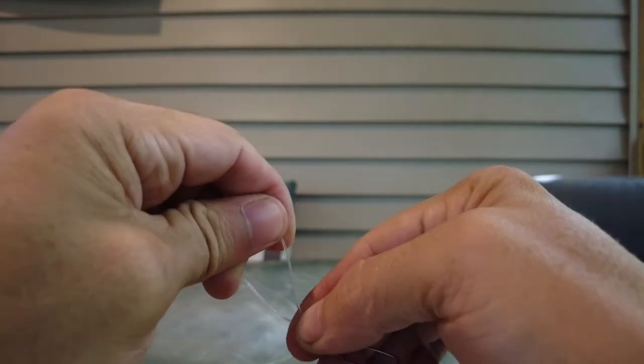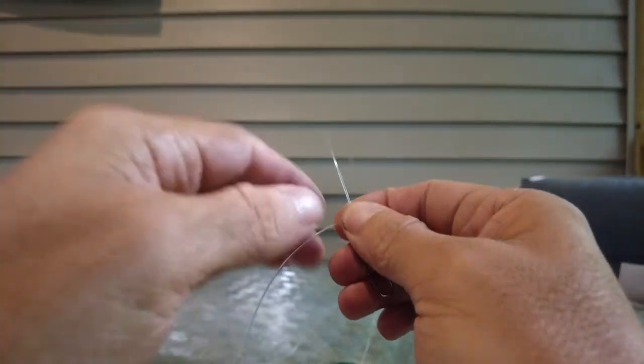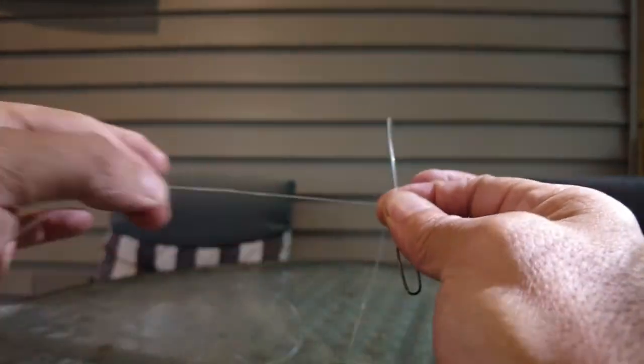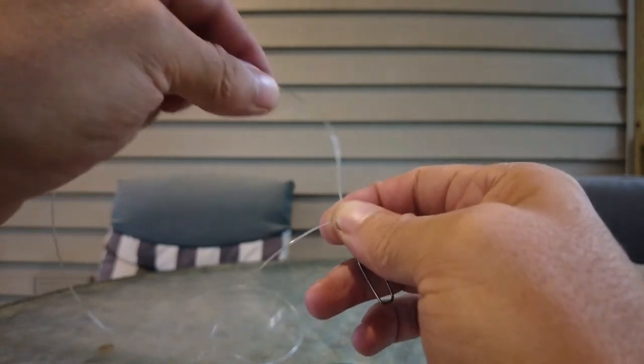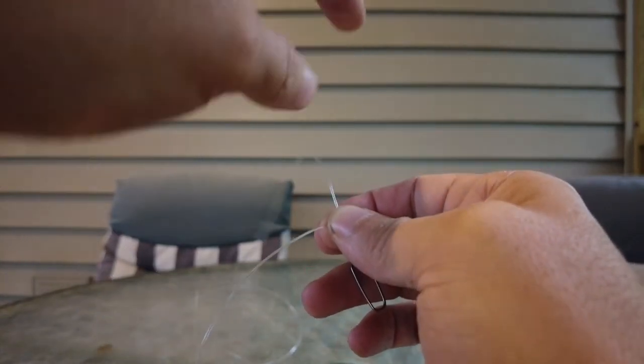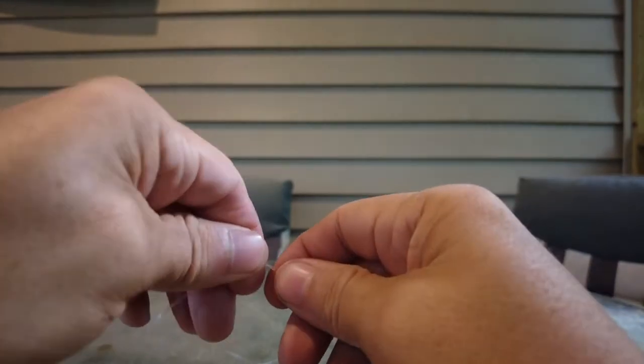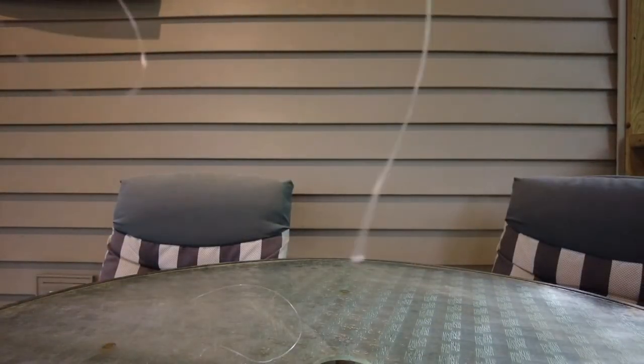Then we're going to pinch it with our thumb and pointer finger. You want your main line to be coming out horizontal and your tag line to be coming up through the top. Give me a second here. I got this backwards.